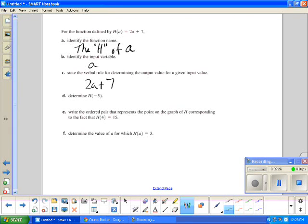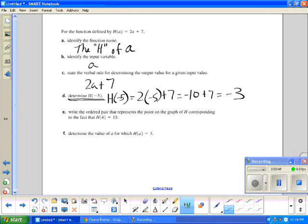And here is a way to ask somebody to input negative 5 for a to find the output. The input is negative 5. Then the output would be negative 3.